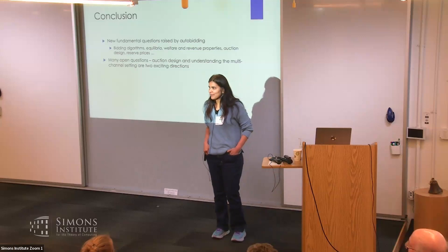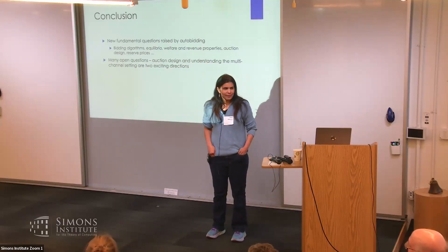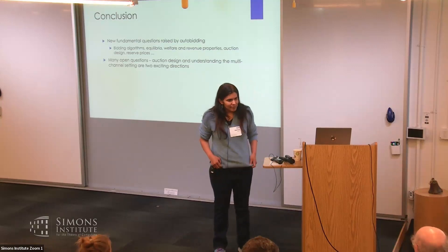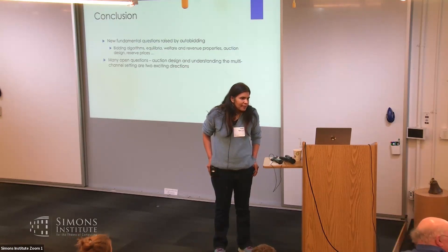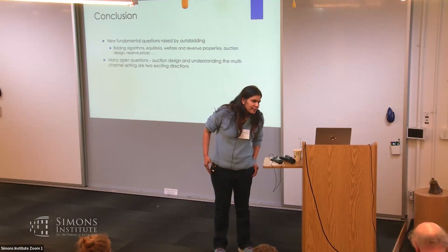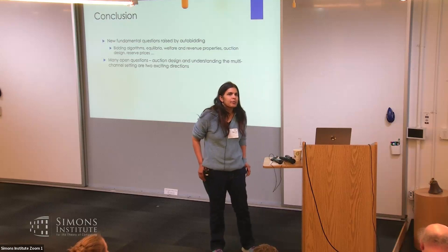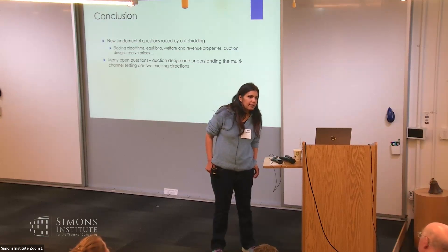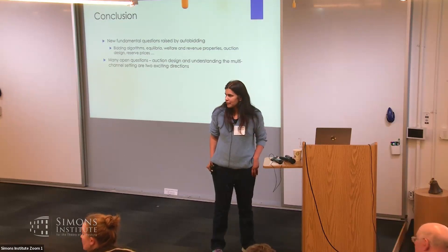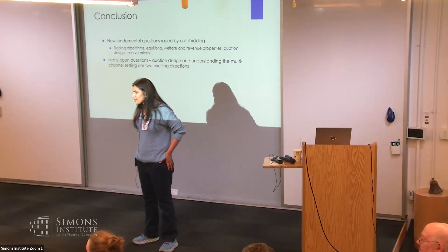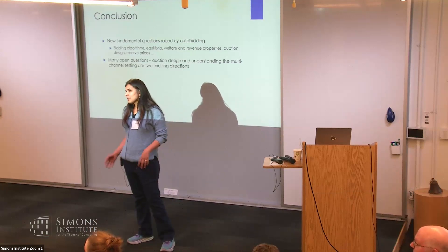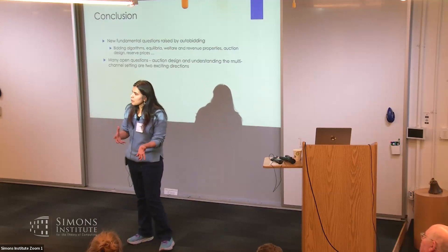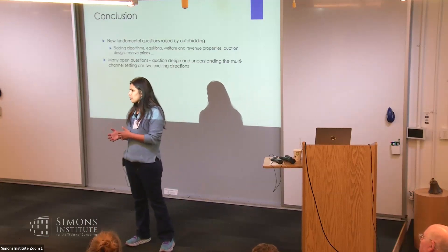Is there a quick question for Gagan before we break for lunch? Bidders can always collude and potentially gain as much as if they were a single bidder. In practical setups, do you also see auto-bidding and traditional manual bidding coming together, and what does that create? In practice, auto-bidders are participating in the same auctions that were originally being run — so there are manual bidders as well as auto-bidders in the same auctions. As we saw in the auto-bidding algorithm, it just participates in the auction very naturally, and the auction is the place where they get combined together.